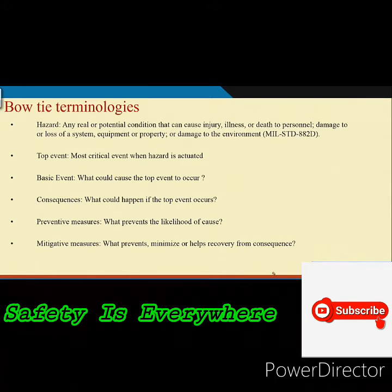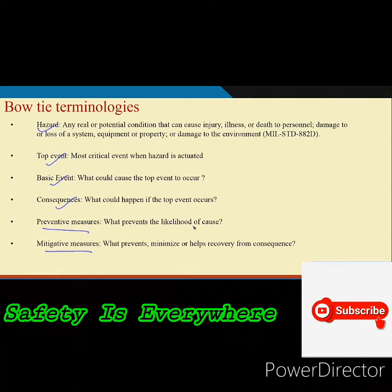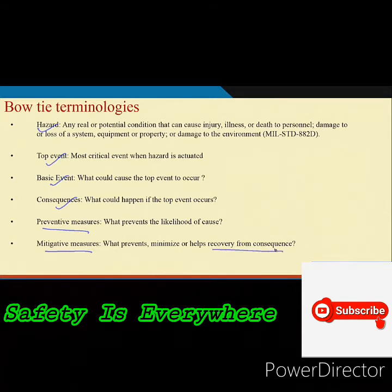The terminologies are very much known to you: hazard, top event, basic event, consequences, preventive measures, and mitigating measures. By preventive measures, we mean what you do so that the top event will not occur — basically ensuring the cause will not occur. Similarly, mitigating measure is what you do so that the impact of an accident will be minimized — you will basically minimize the impact or enable recovery from the consequences. I have explained all those things many times, so I do not think further explanation is required here.